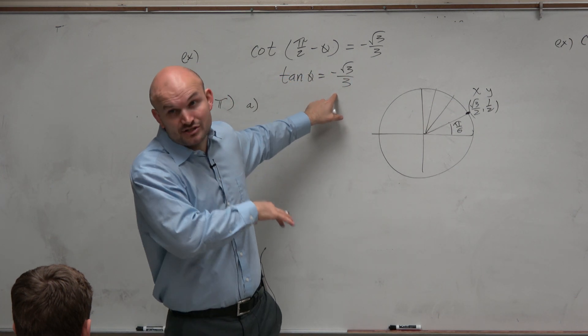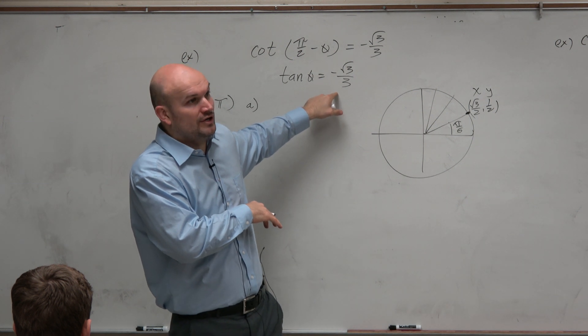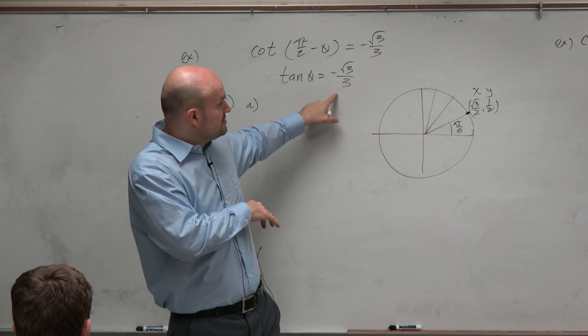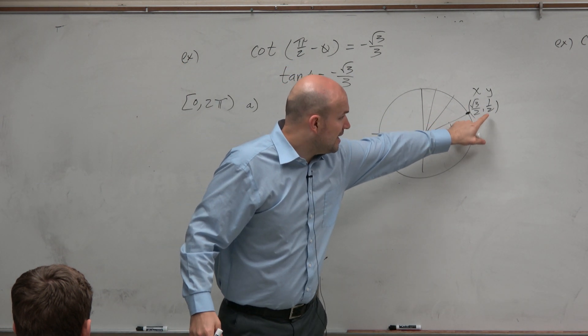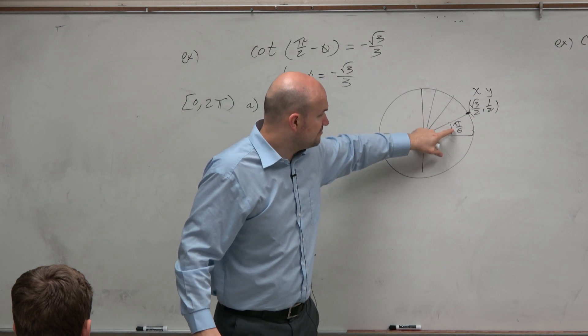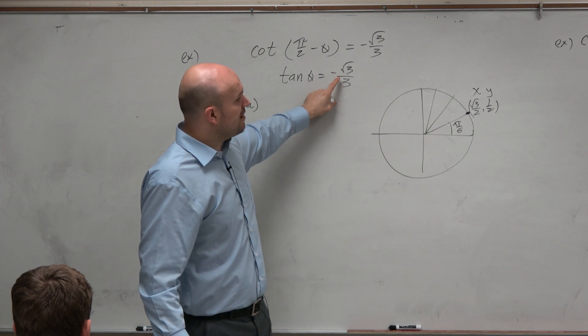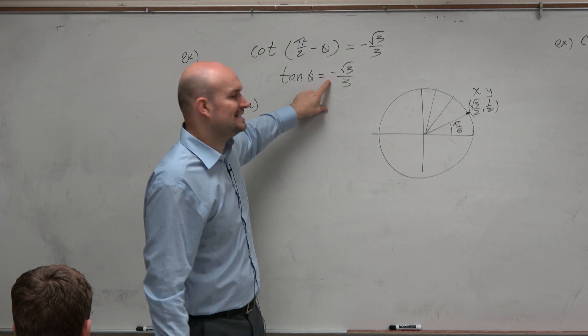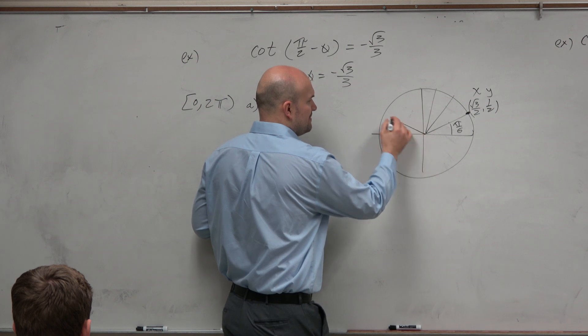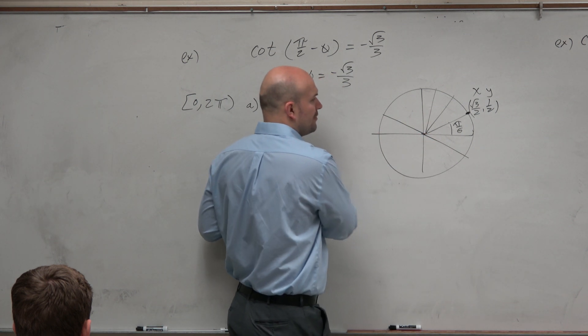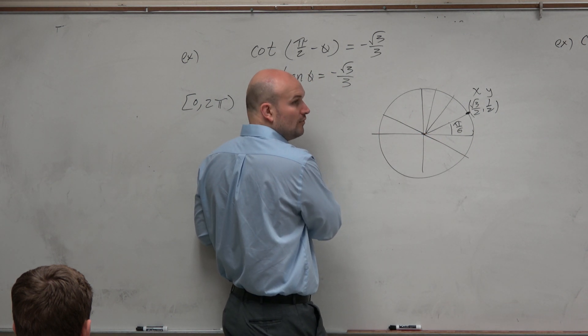I don't have time to do the algebra. That was the last chapter. We've already done this over and over again. So you guys should know that y over x, which is tangent of π over 6, gives you square root of 3 over 3. However, that's positive. This equation wants negative.